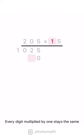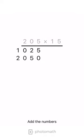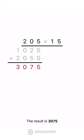Every digit multiplied by 1 stays the same. Add the numbers. The result is 3,075.